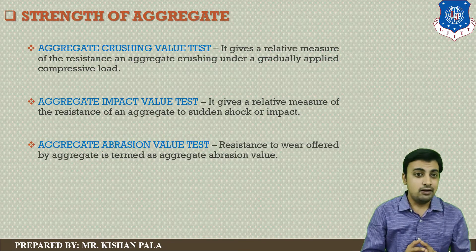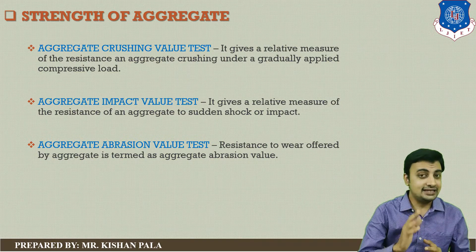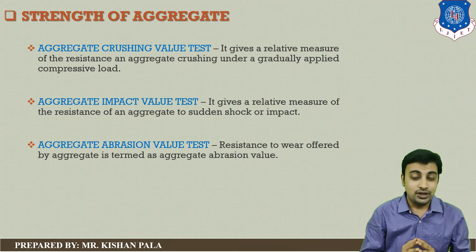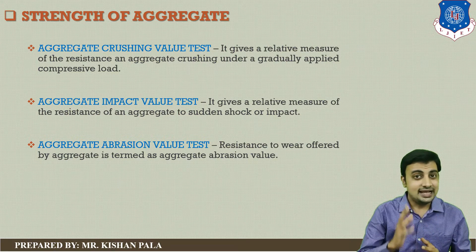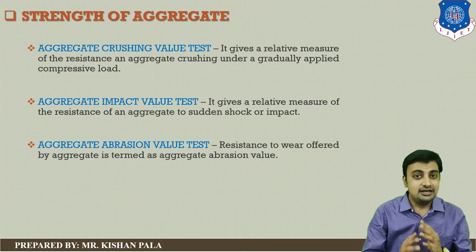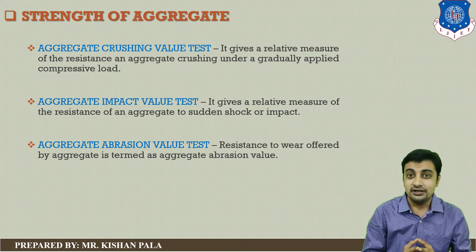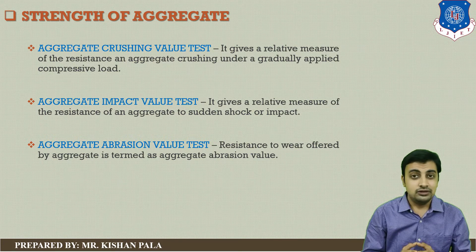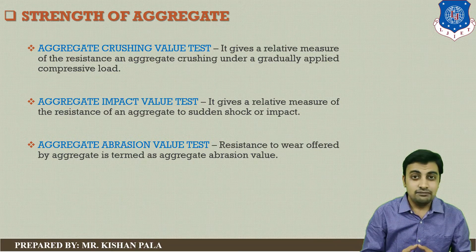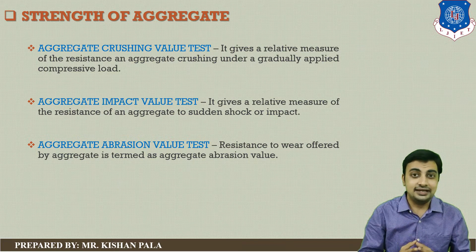Strength of aggregate depends on aggregate crushing value, aggregate impact value, and aggregate abrasion value. As we know, concrete is applied with different types of loading, like gradual loading, impact loading, and others. So depending on the load, strain will be developed in the aggregates and it directly affects the concrete mass, particularly the strength and the durability. So we have to find out the strength of the aggregates, which we can find with three tests: aggregate crushing value test, aggregate impact value test, and aggregate abrasion value test.